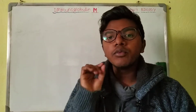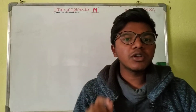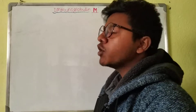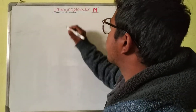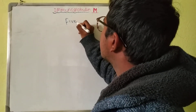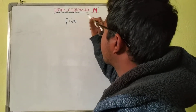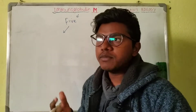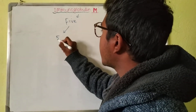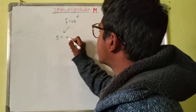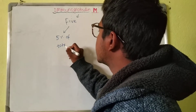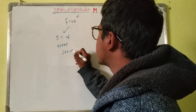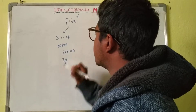In order to know about Immunoglobulin M, we need to remember a mnemonic — that is the 'Power of Five' or the 'Immunoglobulin of Five.' Immunoglobulin M is five percent of total serum immunoglobulin.